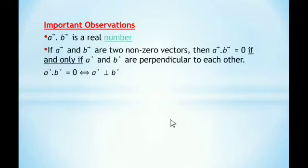Important observations: Note that a·b is a real number. Obviously, when we multiply two vectors with the dot product, it will always be a real number. If a and b are non-zero vectors, then a·b = 0 if and only if a and b are perpendicular to each other. If both a and b are non-zero vectors, their dot product will be zero only on the condition that the angle between them is 90°.